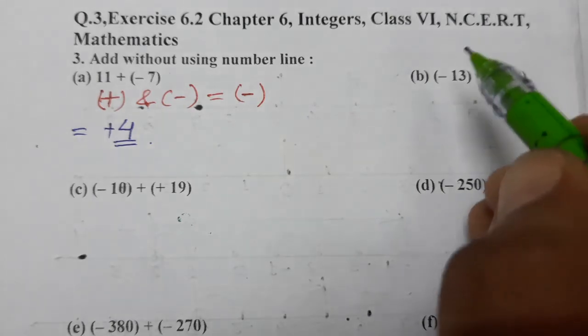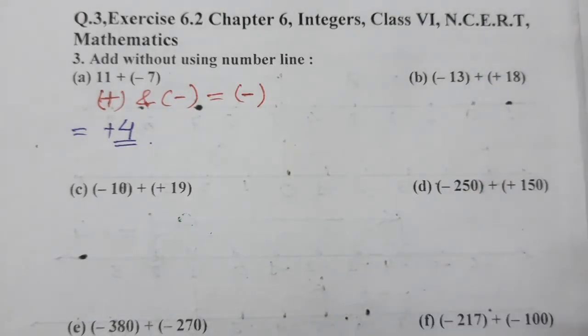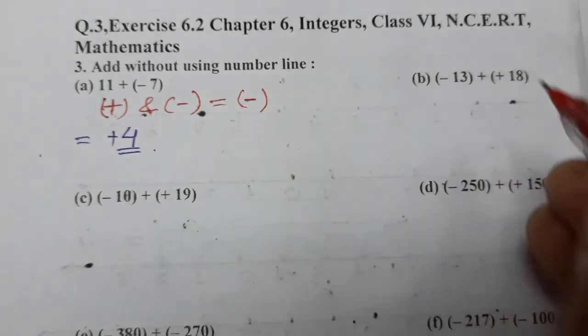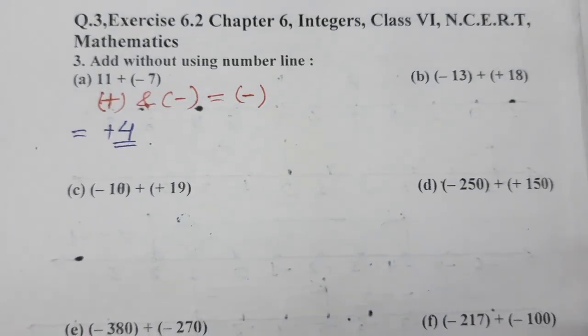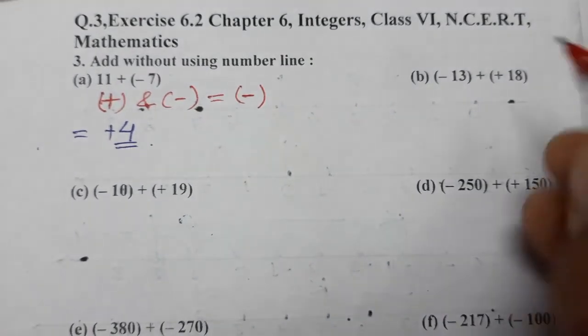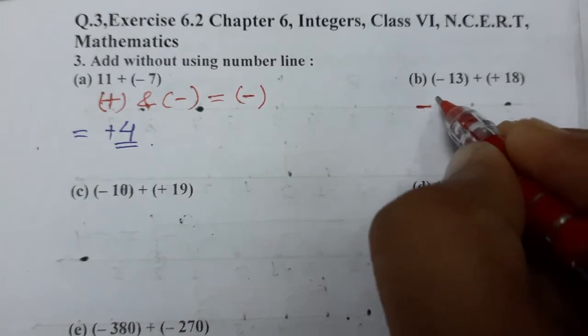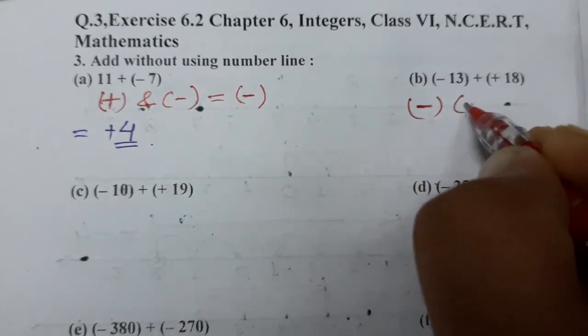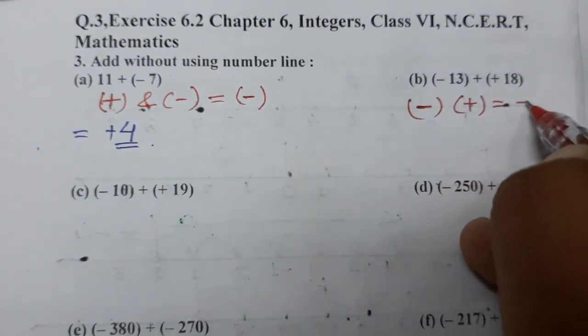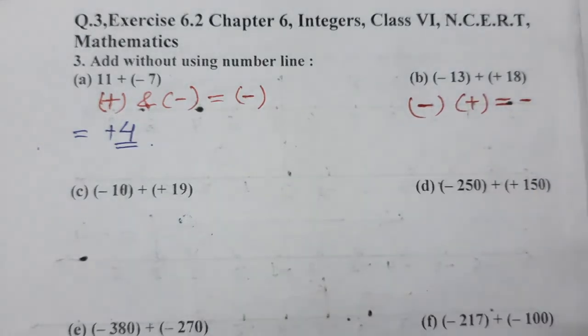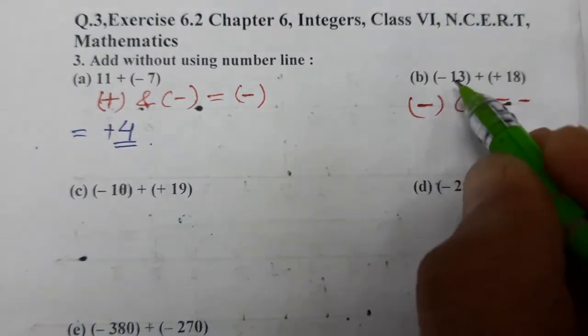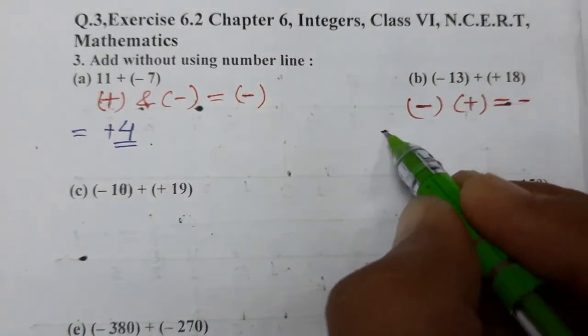Now let's do (b). Again one minus, one plus. Whenever one minus one plus came, we have to subtract. Minus plus minus, and put the sign of the bigger one. So let's see which is bigger: minus 13 plus 18. First subtract 18.